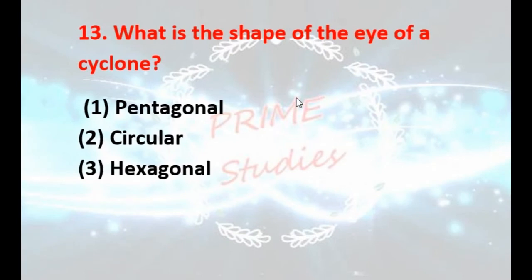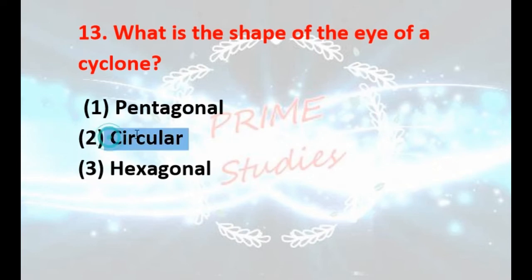What is the shape of the eye of a cyclone — pentagonal, circular, or hexagonal? It is the second: circular.